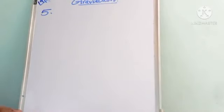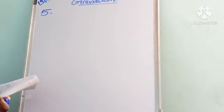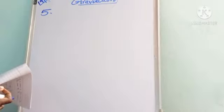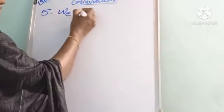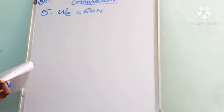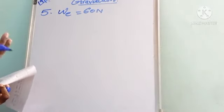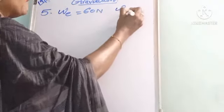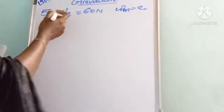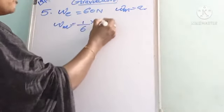Fifth question: a body weighs 60 N on the surface of Earth. What should be its weight when measured on the surface of the Moon? Weight on Earth = 60 N. We know that the weight of an object on the Moon is 1/6th of its weight on Earth.